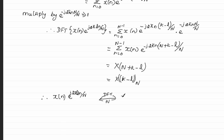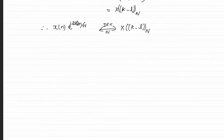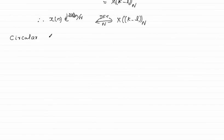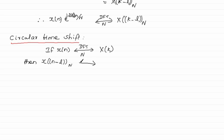Circular time shift property: when we take the DFT of x(n) and it equals X(k), then x(n-l) modulo N, when we take N-point DFT, is equal to X(k) multiplied by e to the power minus j 2π k·l/N.